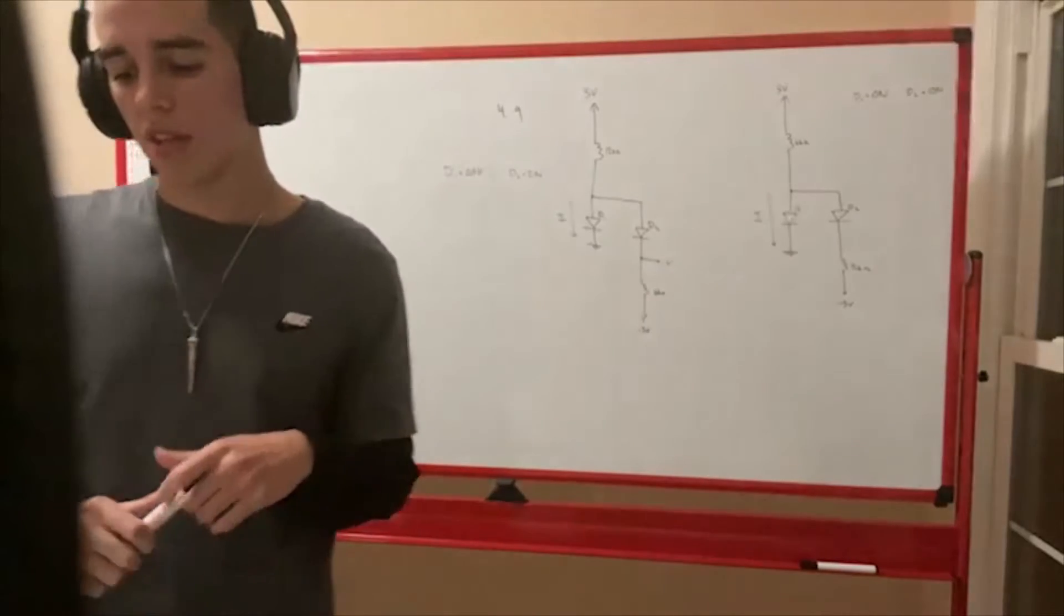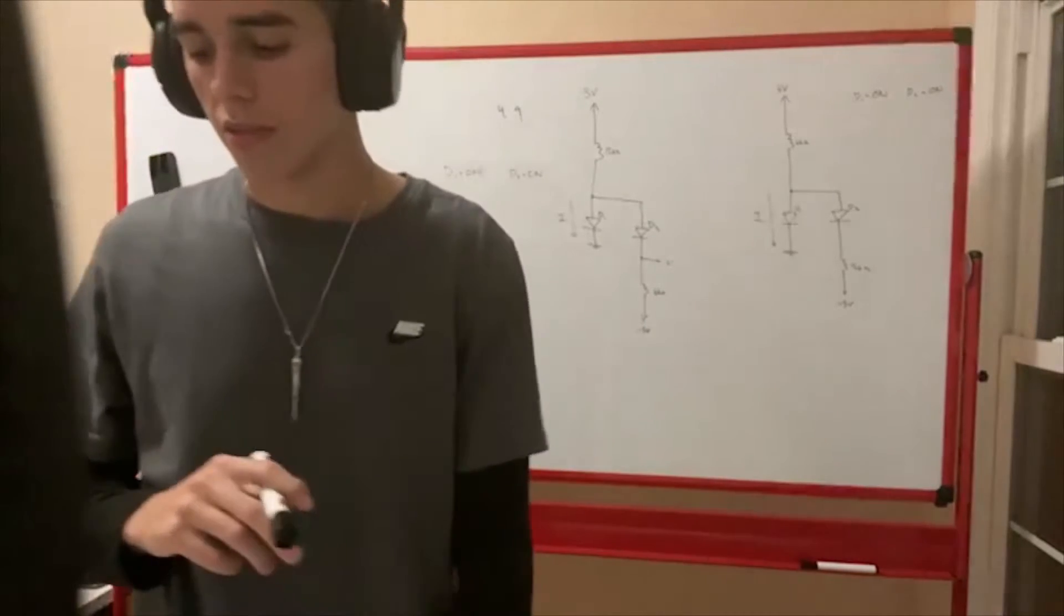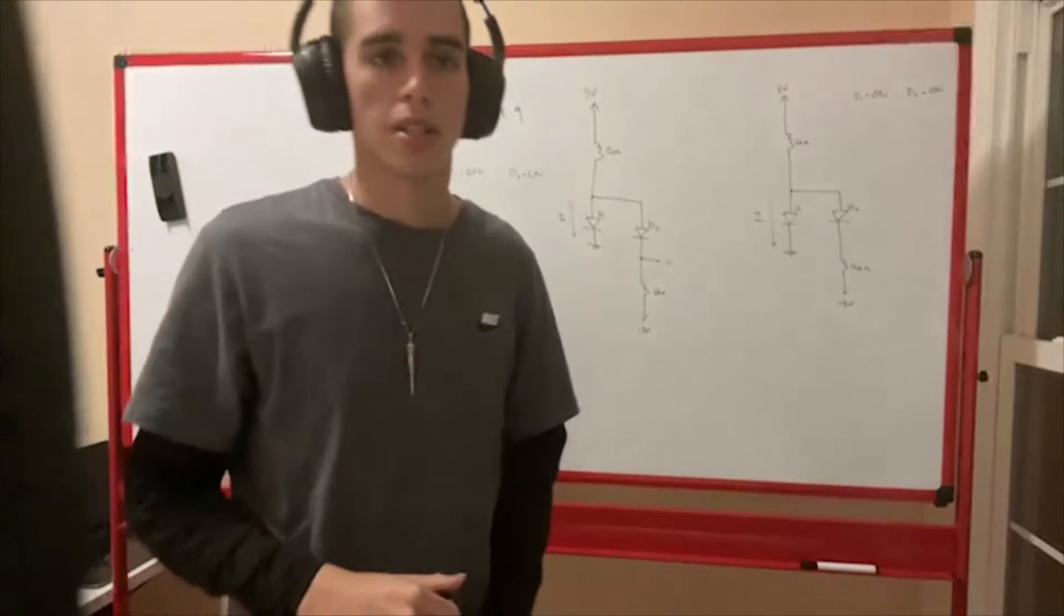Assuming that the diodes in the circuit of figure P4.9 are ideal, find the values of the labeled voltages and currents.